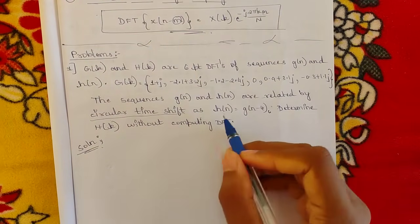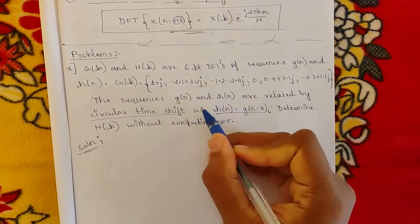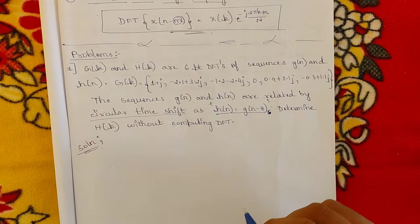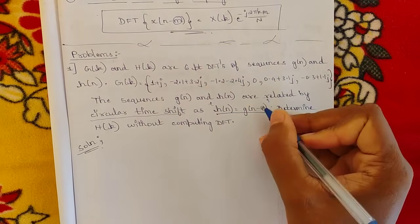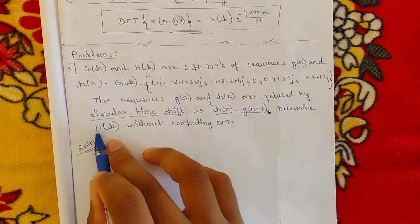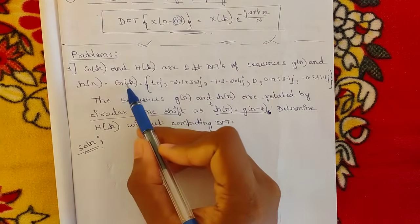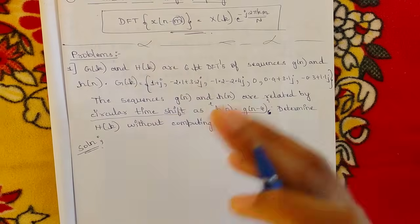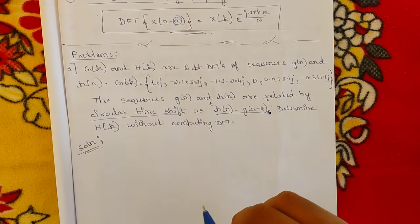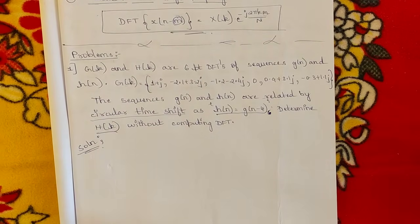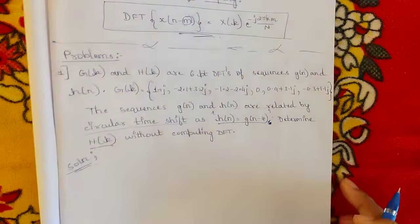The relation given is h(n) = g((n−4))₆, where 6 stands for the six-point DFT, and in place of m (the number of shifts) we have 4. We need to determine H(k) — that is, given G(k), find H(k) without computing the DFT. Using the circular time shift property is our goal.